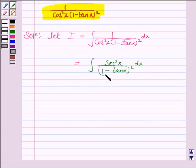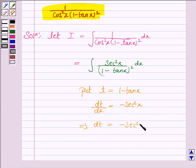Now, we see that the derivative of 1 minus tan x is minus secant square x. So, put t equal to 1 minus tan x. So, dt by dx is equal to minus secant square x. And this implies dt is equal to minus secant square x dx. And this implies secant square x dx is equal to minus dt.